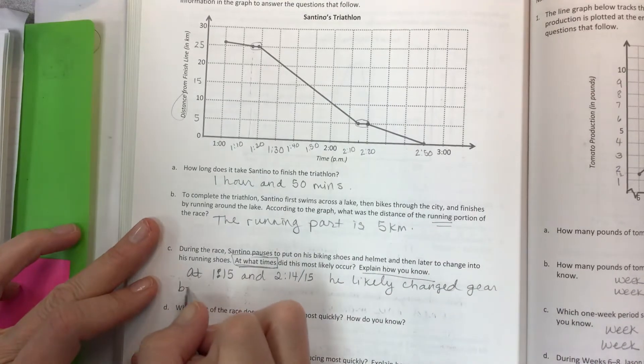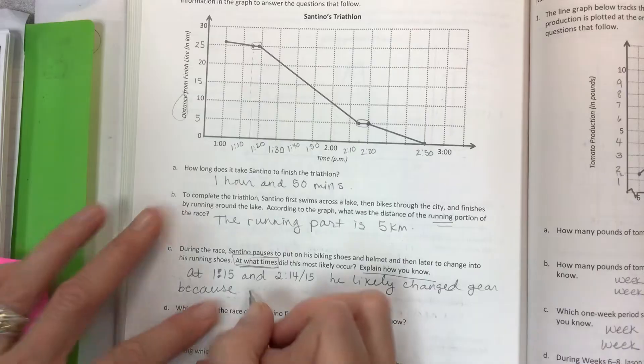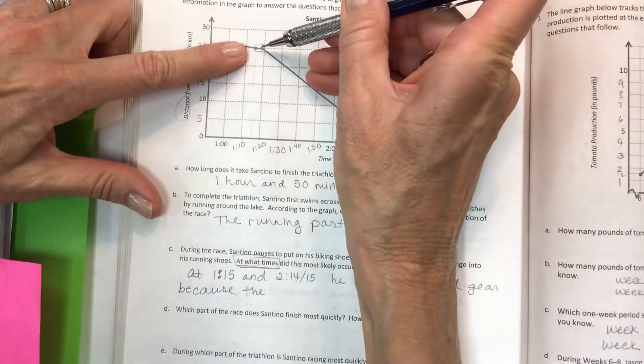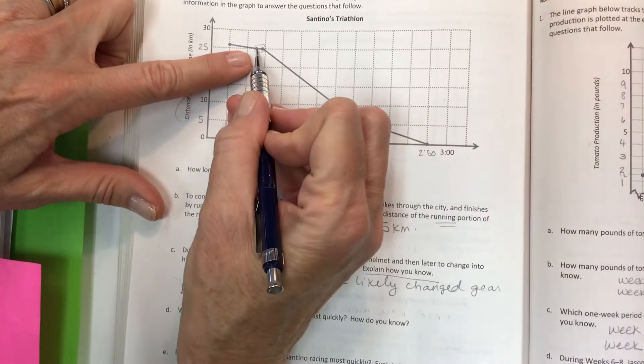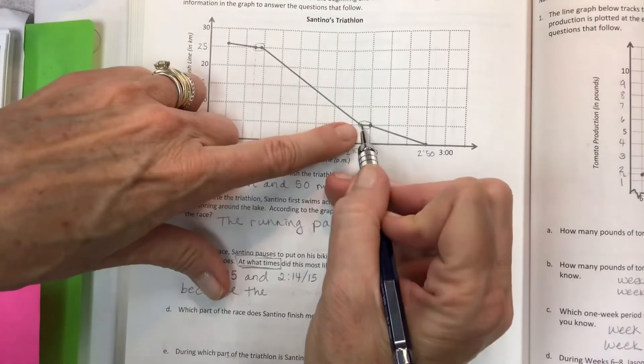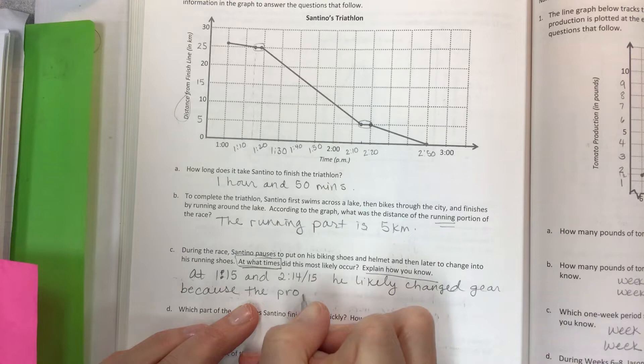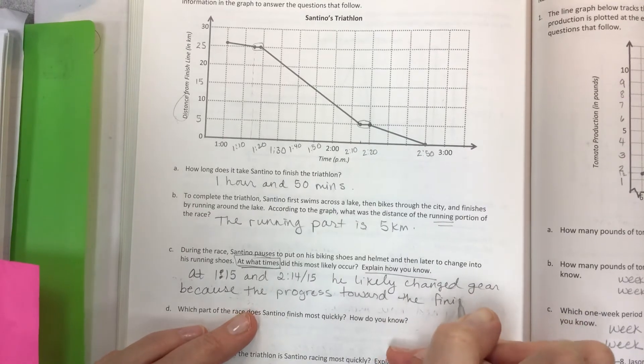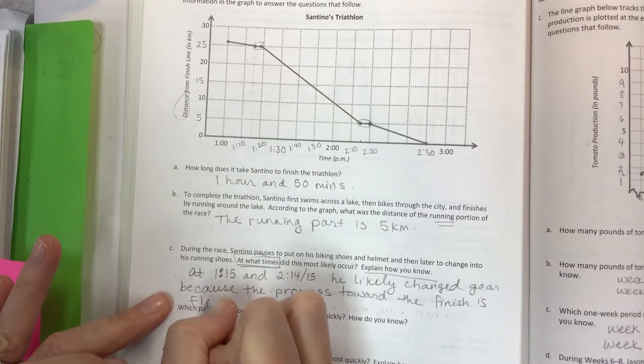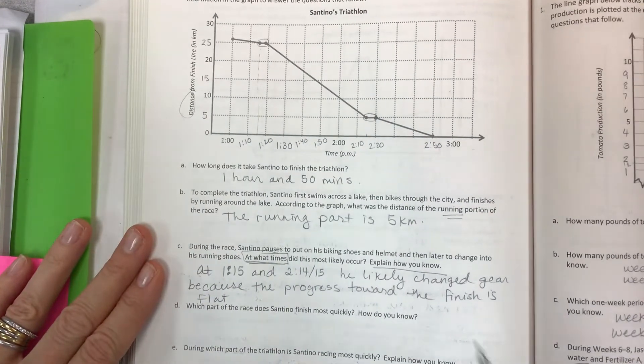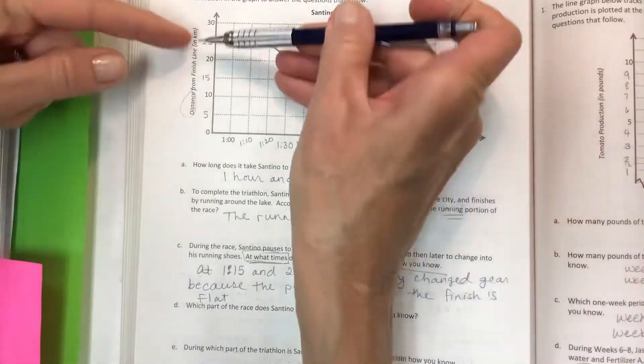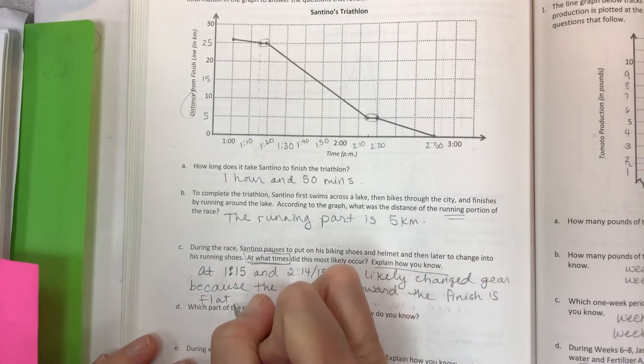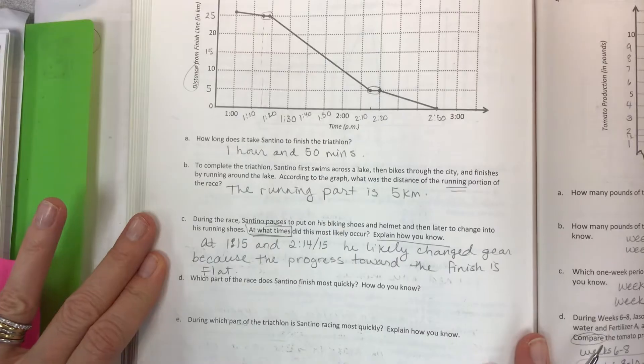Now you want us to explain because those are just the times. Remember, if he's making progress towards the finish line, it goes down. He's not progressing towards the finish line. Not progressing. Because the progress toward the finish is flat. The line is flat. And that's the giveaway. If the line is flat, he is not moving toward the finish line, which is at zero. Very important. And then you could even say something about that would show on the y-axis.